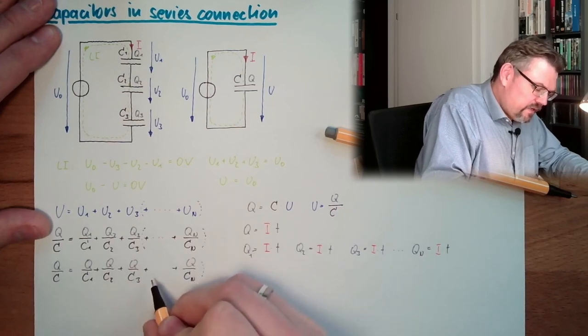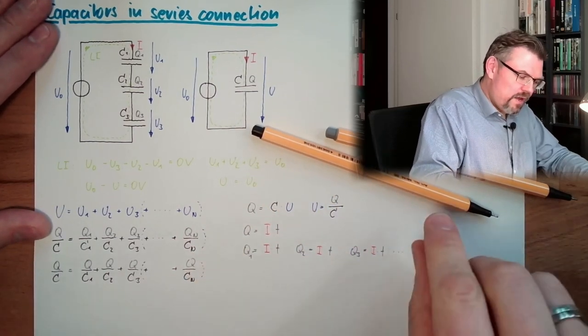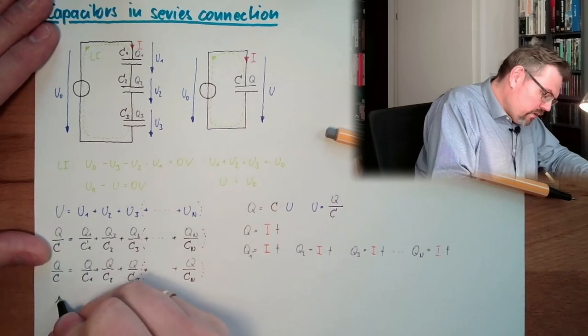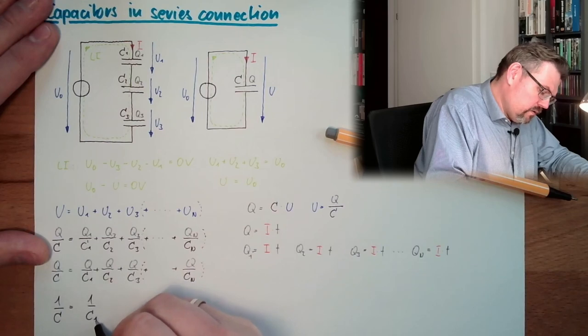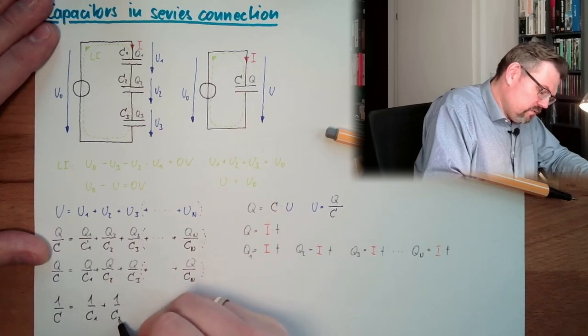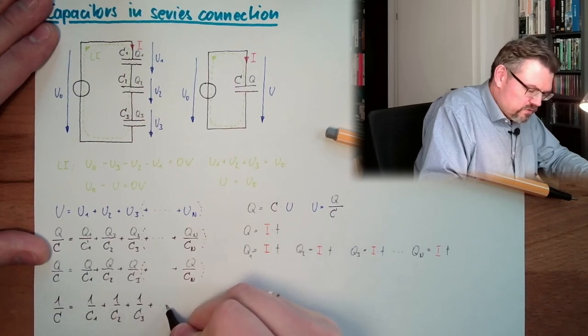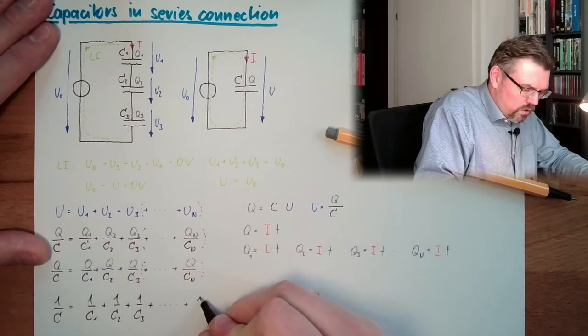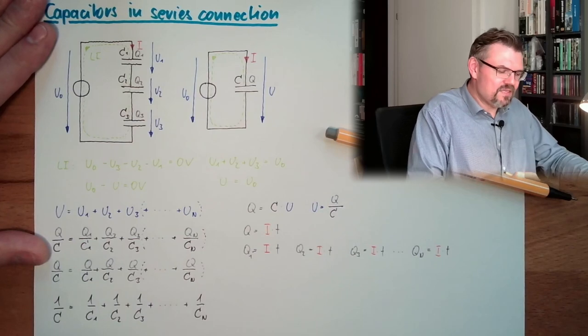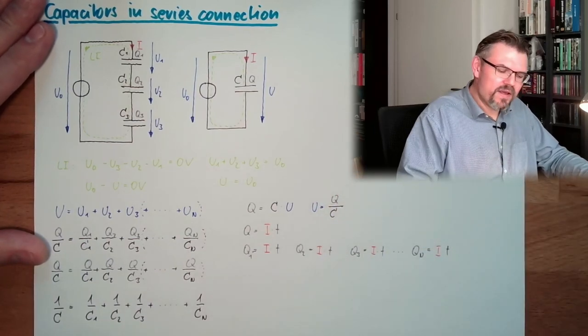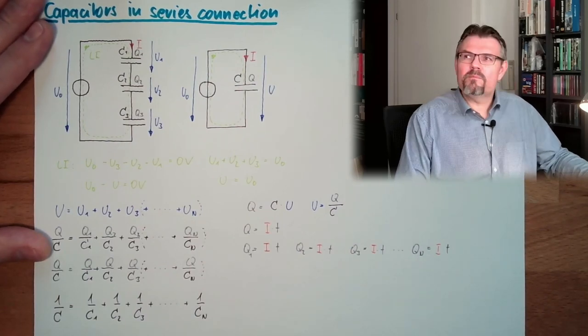And now I can divide by q, and then there is written 1 divided by c equals 1 divided by c1, plus 1 divided by c2, plus 1 divided by c3, plus and so on, 1 divided by cn. And this is how you can calculate a replacement capacitor in a series connection of capacitors.